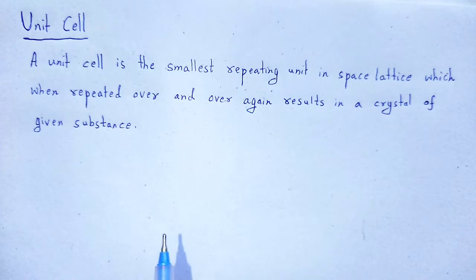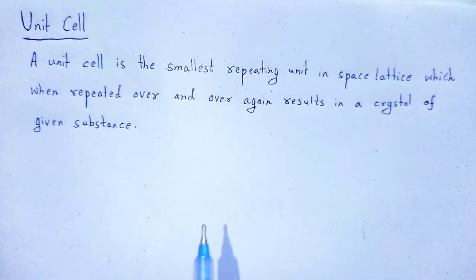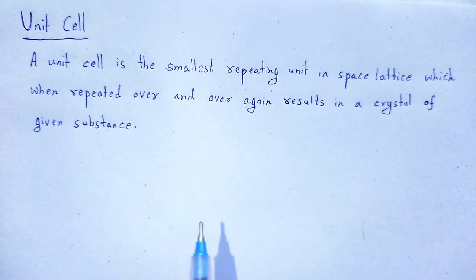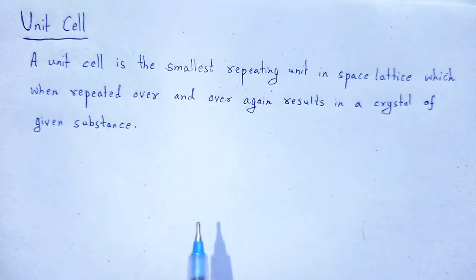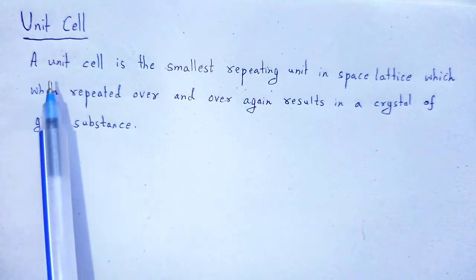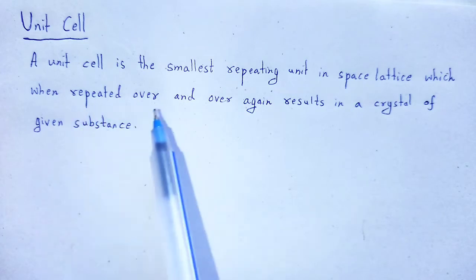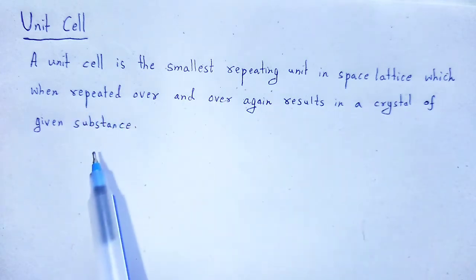When we are dealing with crystalline solids, the atoms are arranged in a regular and orderly manner. Hence, it is convenient to express the structure of a crystal by taking only a small group of atoms to show the arrangements of atoms in that particular crystal. That small group of atoms is located in a cell, and that cell is known as unit cell. A unit cell is the smallest repeating unit in space lattice, which when repeated over and over again results in crystal of a given substance.